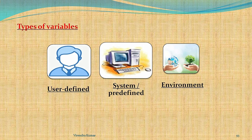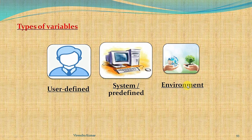In Azure DevOps, we have three types of variables. The first is the user-defined variable, which means a user can define a variable name and provide a value to it. The second is the system-defined variables, which are related to the operating system level and the agent machine level.